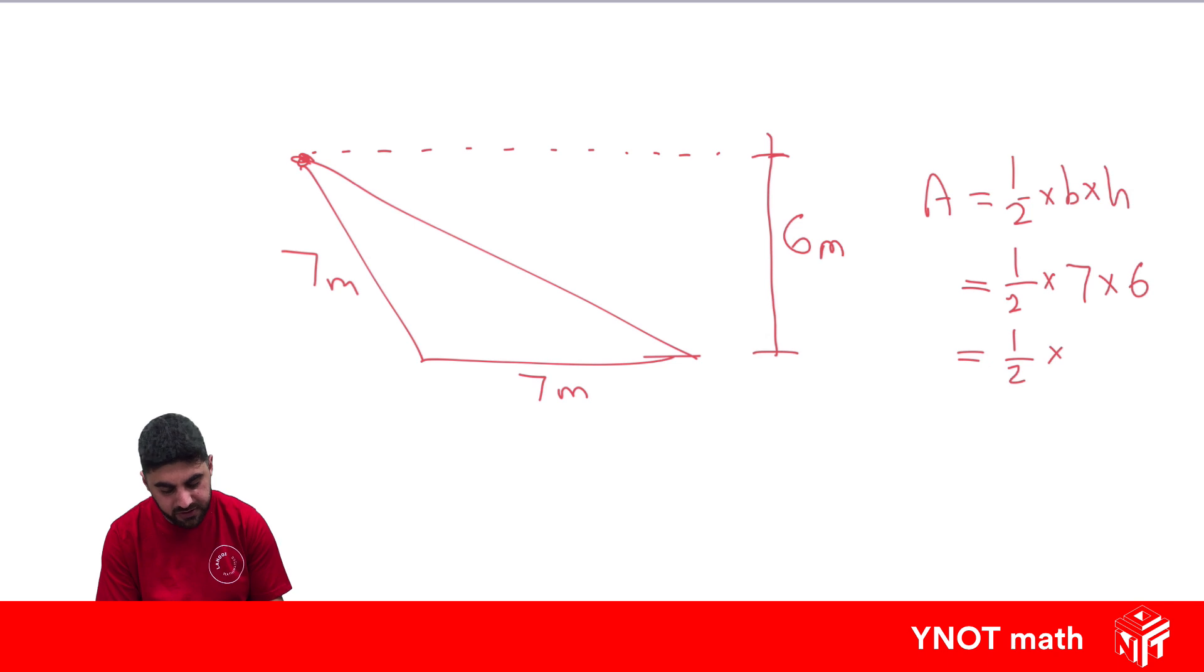So it's a half times seven times six is 42. And half times 42 is 21 meters squared for our area.